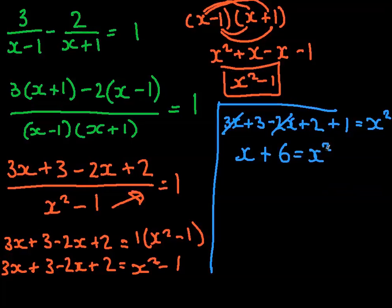And then now simply we just need to bring it all onto the x squared side. So x squared, this would become minus x, and this would become minus 6, equals 0.